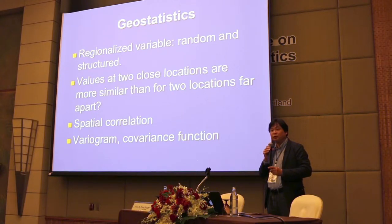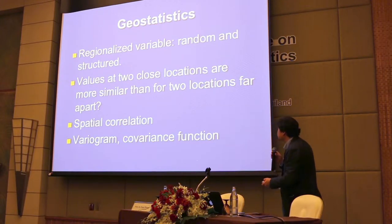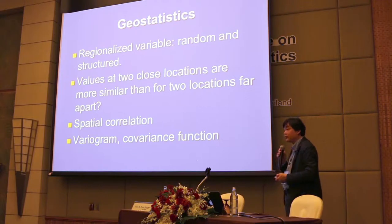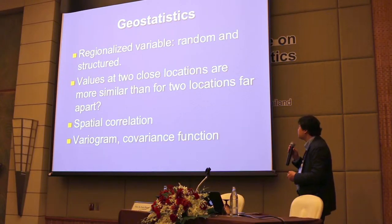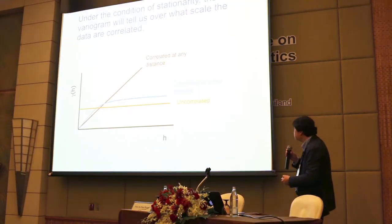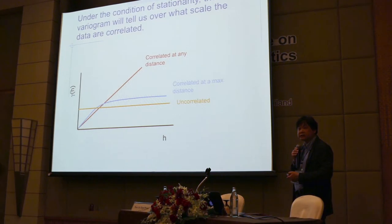To distinguish it from conventional statistics, this is called the regionalized variable, and it has two distinct characteristics: first, it is structured, and second, it is random — both deterministic and random at the same time. One key aspect is that we study the spatial correlation, called a variogram. This theory differs from conventional statistical analysis because, for some kinds of data, we don't find the variance or correlation directly, but we can find the variogram.